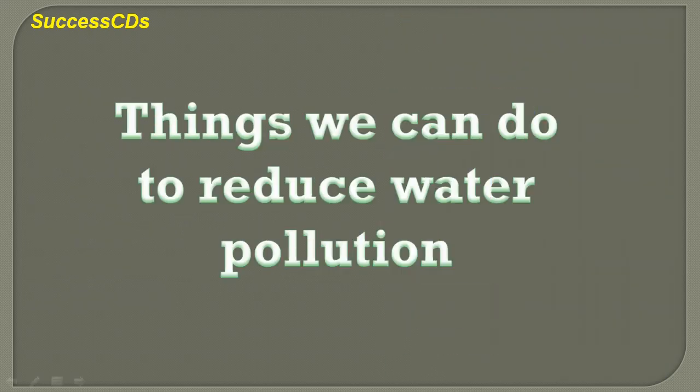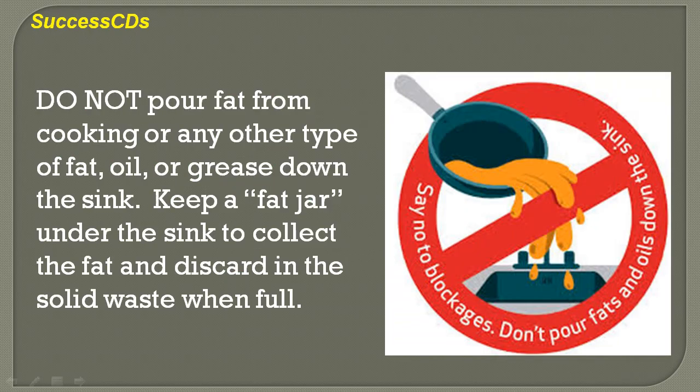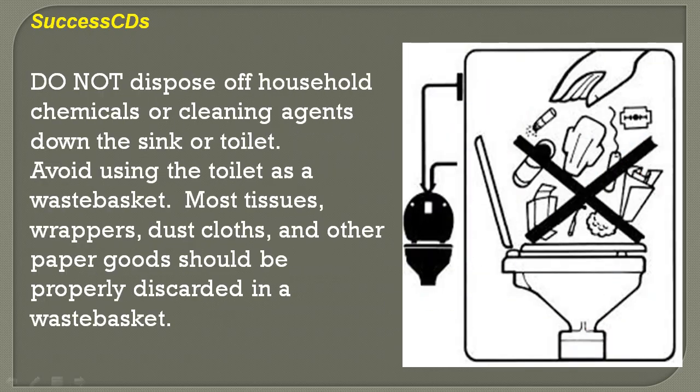Things we can do to reduce water pollution: Do not pour fat from cooking or any other type of fat, oil or grease down the sink. Keep a fat jar under the sink to collect the fat and discard it in solid waste when full. Do not dispose of household chemicals or cleaning agents down the sink or toilet. Avoid using the toilet as a waste basket — tissues, wrappers, dust cloths and other paper goods should be properly discarded in a waste basket.